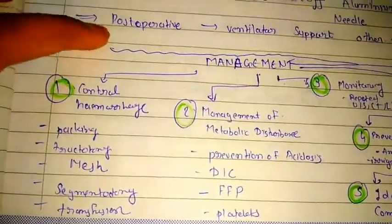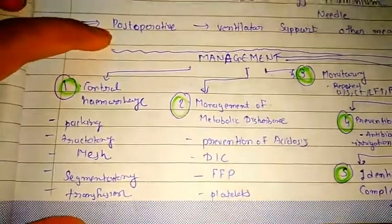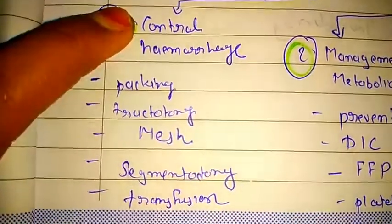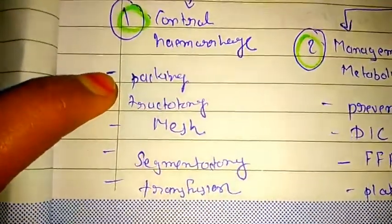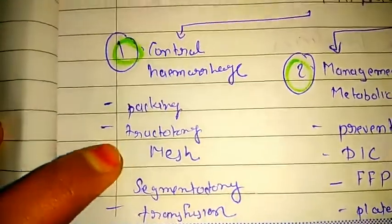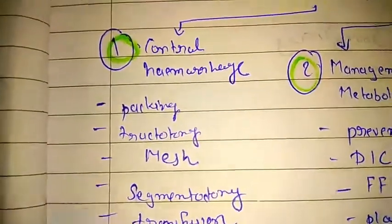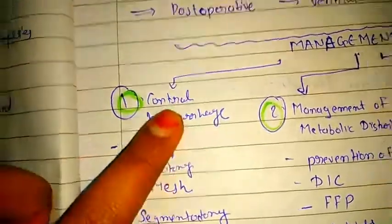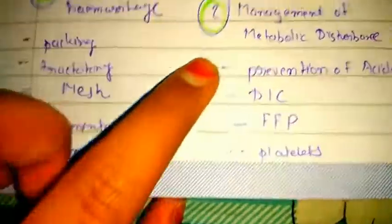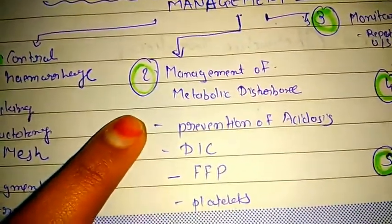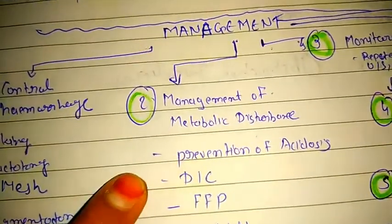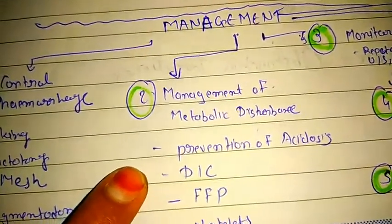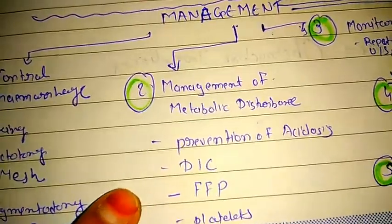The overall management in brief: first, control hemorrhage by packing, tractotomy, mesh hepatorrhaphy, segmentectomy, and transfusion. Then management of metabolic disturbance: prevention of acidosis, management of disseminated intravascular coagulation using fresh frozen plasma and platelets.